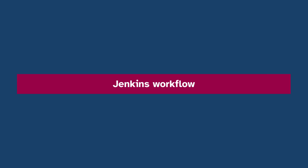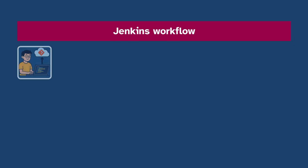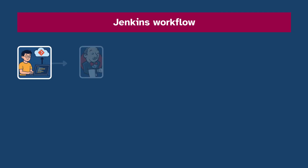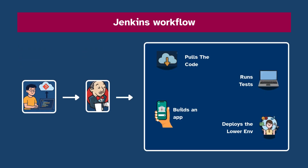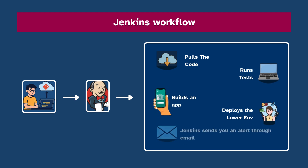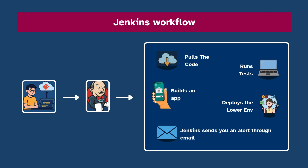Let's walk through a basic Jenkins workflow. A developer pushes code to GitHub; Jenkins sees the change, automatically pulls the code, runs tests, builds the application, and maybe even deploys it to a lower environment such as test or stage — production is often done manually for its critical nature. If any of these steps fail, Jenkins sends you an alert through email or Slack. It's like having a 24/7 quality control system for your software.